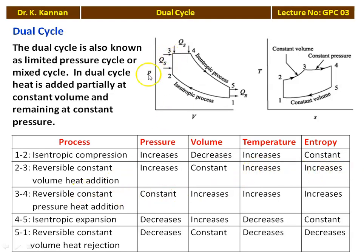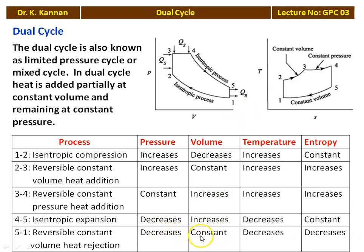Process 3-4 is constant pressure heat addition: pressure remains constant, volume increases, and temperature and entropy also increase due to heat addition. Process 4-5 is isentropic expansion: pressure decreases, volume increases, temperature decreases, and entropy remains constant. Finally, process 5-1 is reversible constant volume heat rejection: pressure decreases, volume remains constant, temperature decreases, and entropy decreases due to heat rejection from the working fluid.